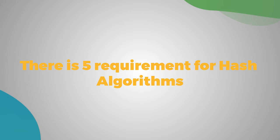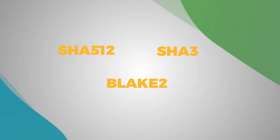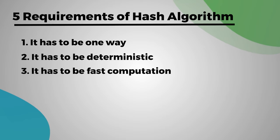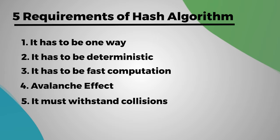There are five requirements for hash algorithms. SHA-256 is not the only algorithm out there—there are others such as SHA-512, SHA-3, Blake2, etc. However, there are certain requirements for it to be useful. The requirements are: first, it has to be one-way; second, it has to be deterministic; third, it has to be fast computation; fourth, avalanche effect; fifth, it must withstand collisions.